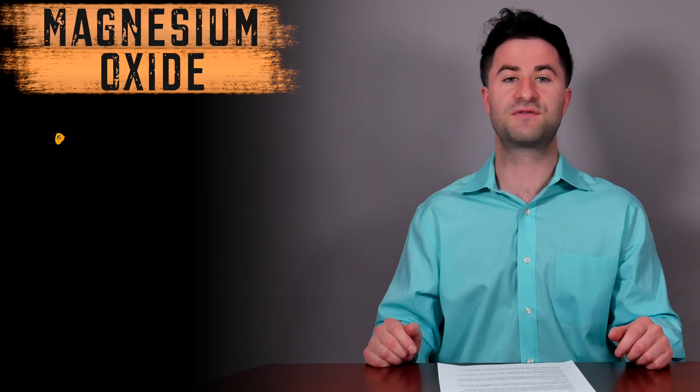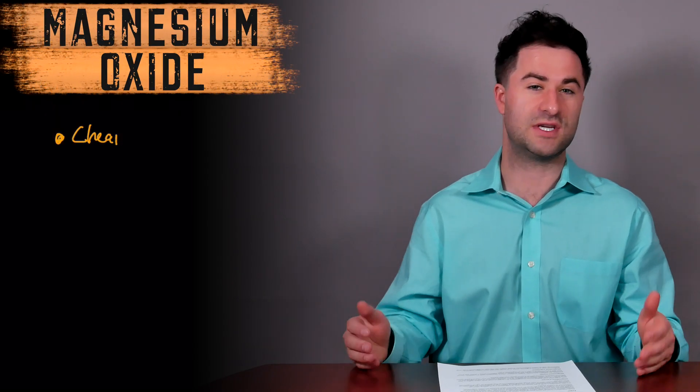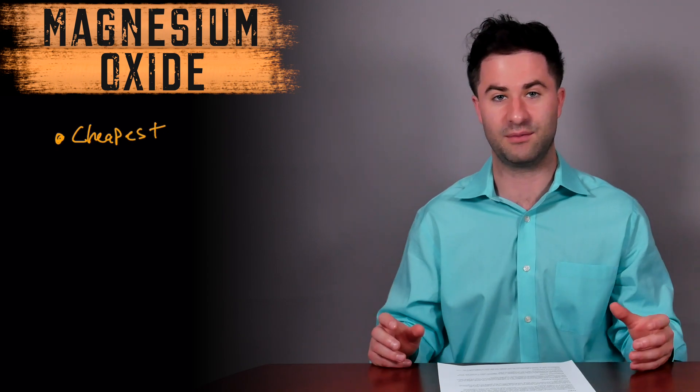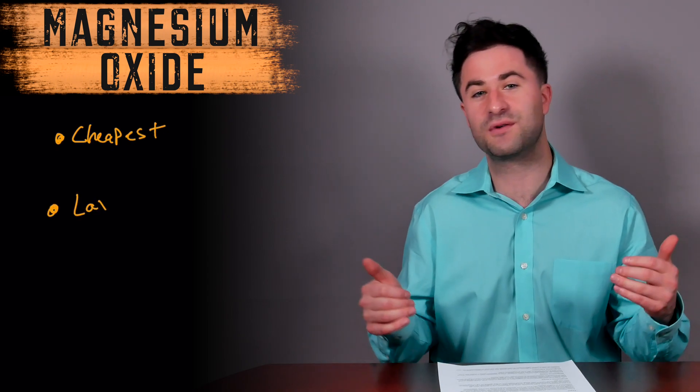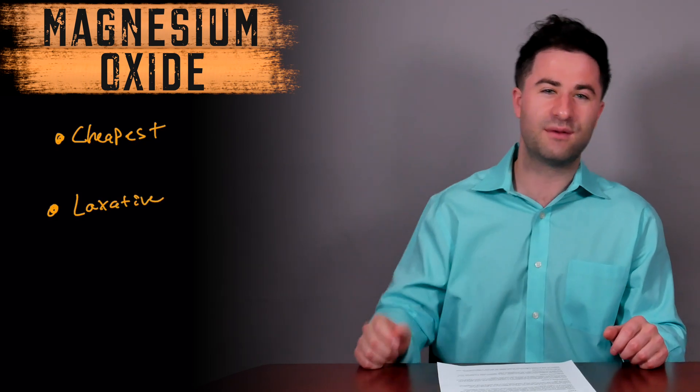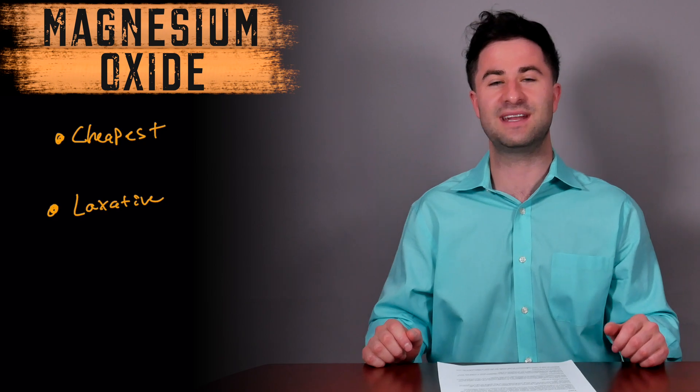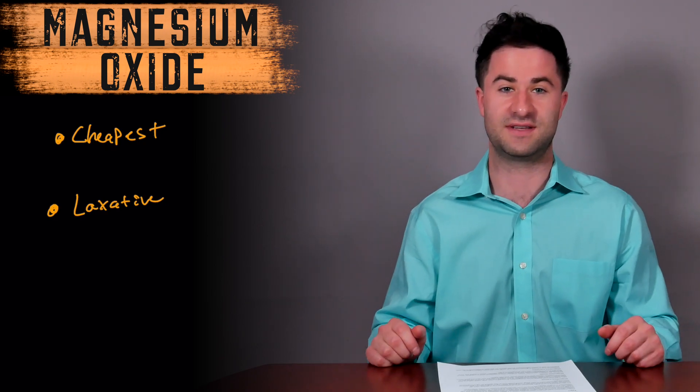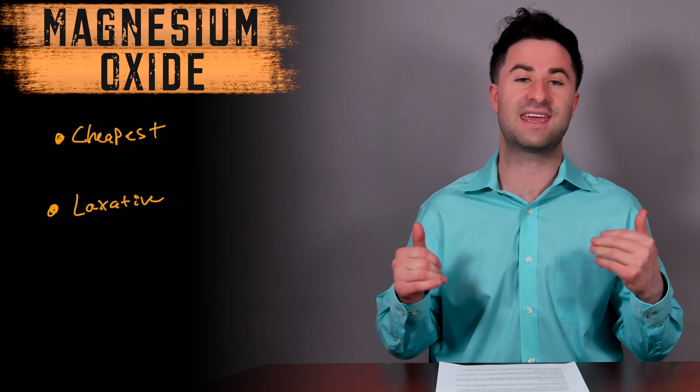The second one on our list is magnesium oxide. This form of magnesium is probably the cheapest and most widely available. However, this type of magnesium is also commonly used as a laxative. It's not quite as bioavailable as magnesium citrate, but it is a little bit less likely to cause diarrhea. Honestly, if you're planning on taking a lot of magnesium, I would also steer clear of this option.